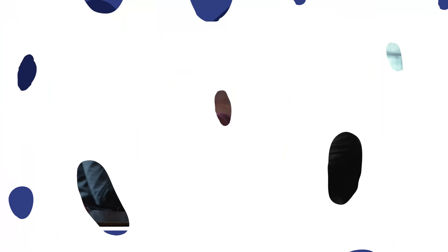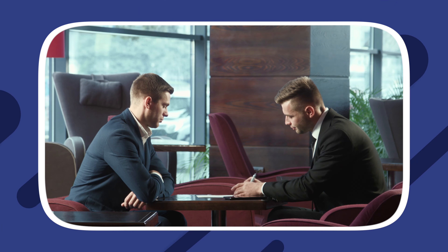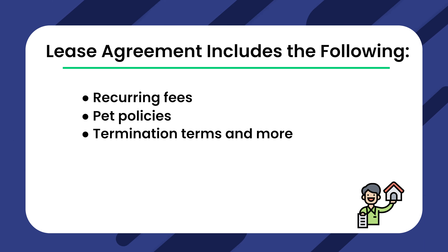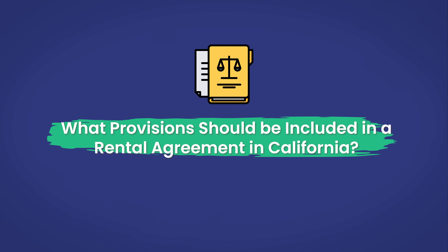A lease agreement sets the foundation for your relationship with your tenant, and it's crucial that it outlines your terms, protects your interests, and provides comprehensive information to prospective tenants. This includes factors like recurring fees, pet policies, termination terms, and more. We'll be breaking down what should be included in your lease agreement to ensure that your rental process runs smoothly.